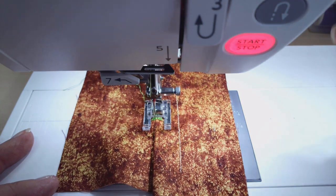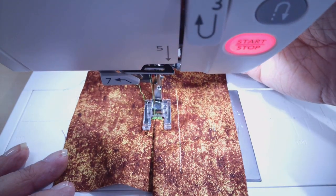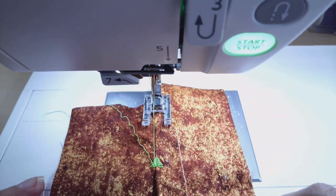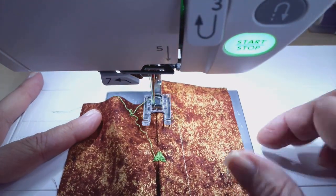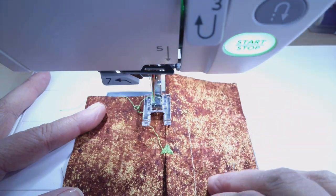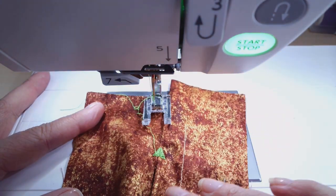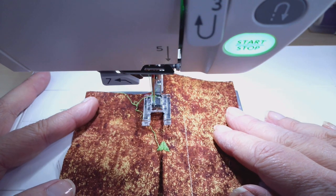A little tie off at the end and you'll see that makes a pretty little decorative reinforcement stitch that you can put at the top of your pleats so that they don't pull out over time.